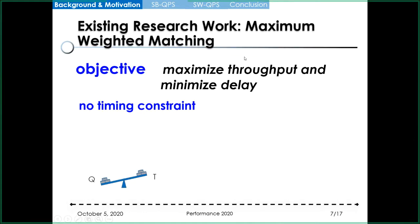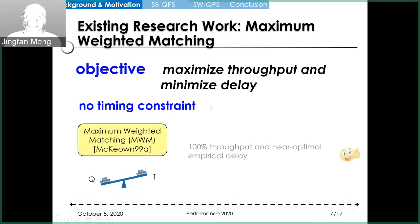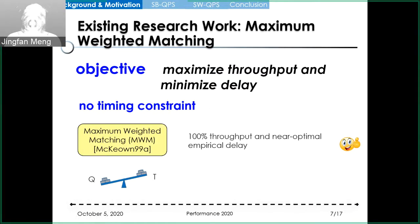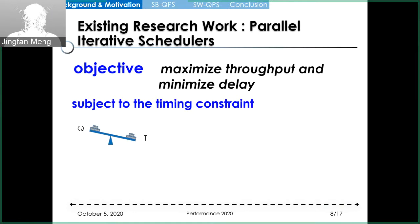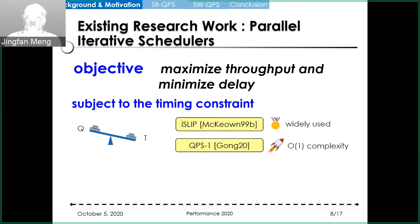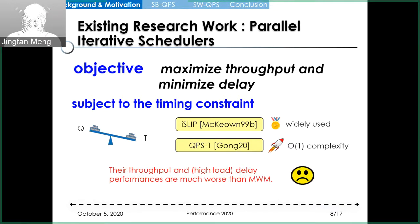On one side, if we have no timing constraint, maximum weighted matching is a good choice. It achieves near-optimal empirical performance, but the complexity is too high. On the other side, we may turn to parallel iterative schedulers to meet the strict timing constraints. For example, iSLIP is widely used in switches, and QPS1 produces each matching in O(1) time. But the quality of these produced matchings is far from optimal.